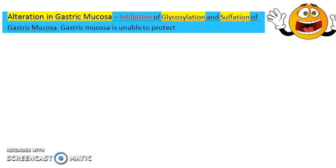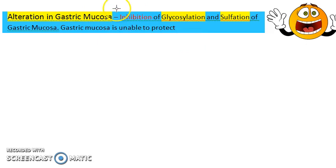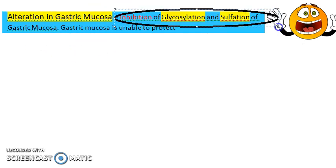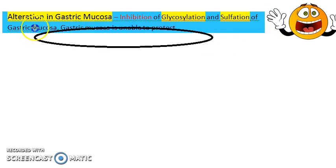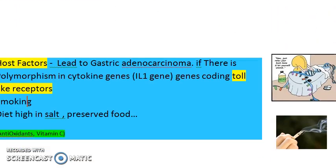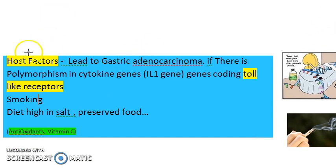The fourth point is alteration in gastric mucosa. The gastric mucosa is altered in such a way that it is unable to protect the stomach lining. H. pylori ensures that glycosylation and sulfation of the gastric mucosa cannot happen, hence the gastric mucosa is unable to protect the stomach. That's point four.